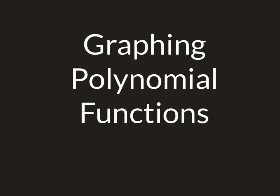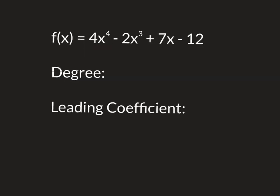Graphing polynomial functions today. When you see a polynomial like this one, two things you have to know: number one is what is the degree and what's the leading coefficient, because pretty much everything we do today is going to be determined by those two things. Degree is the biggest exponent, so the degree is four on that polynomial.